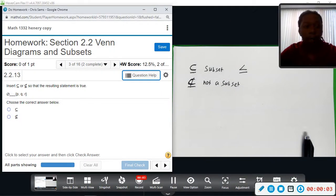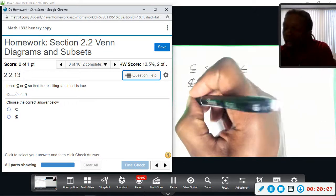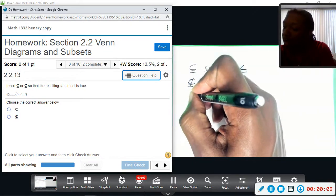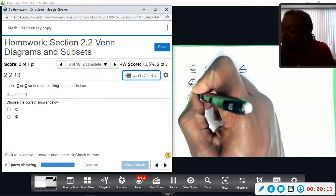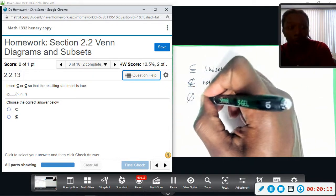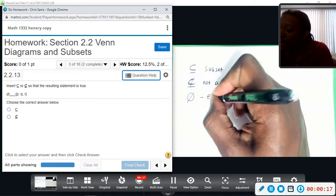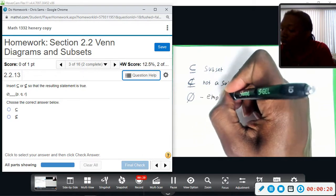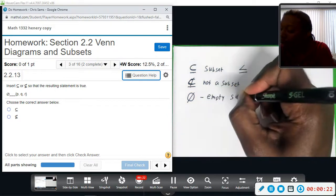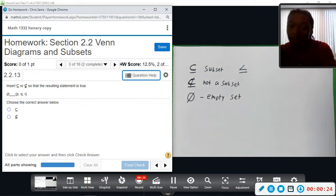Alright, number three. We have this symbol, I think I pointed it out in videos 2.1. This little zero with a line through it, or circle with a line through it, indicates empty set. So this is the set consisting of no elements.